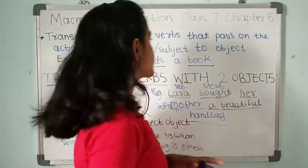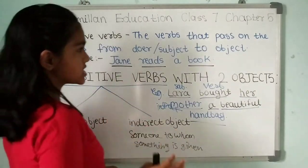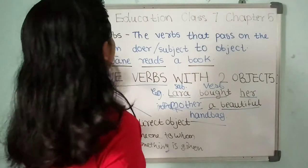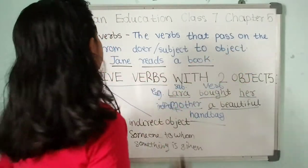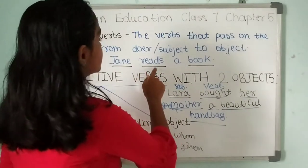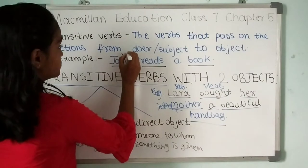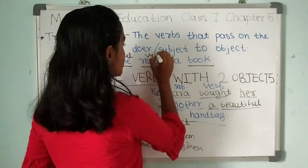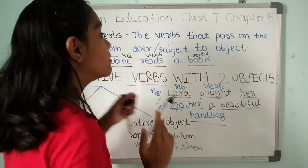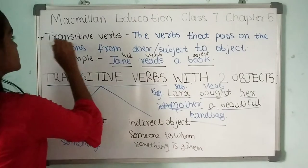So first, what are transitive verbs? Transitive verbs are the verbs that pass on the actions from the doer or subject to the object. For example, 'Jane reads a book.' Here, Jane is the subject, reads is the verb, and book is the object — subject, verb, and object. It makes sense, so it is called a transitive verb.